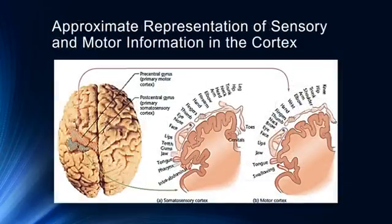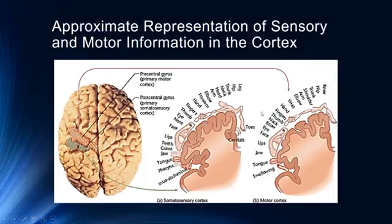The somatosensory cortex and the primary motor cortex are laid out in very similar maps. Some parts of the body are dramatically over-represented in terms of how much cortex is involved. The lips, face, eyes, nose, thumbs, and fingers are much more represented in the cortex compared to the relative space they take up on the skin. Compare that to the elbows, central trunk, core area, and legs, which have much less cortex associated with them — these are much less sensitive areas, while the hands, fingers, and face are much more sensitive to touch.